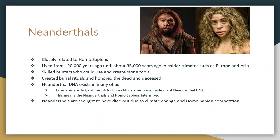DNA studies show that somewhere between one and three percent of the DNA of people of non-African descent is made up of Neanderthal DNA, meaning there was some intermixing and cross-breeding. But we're not 100% sure what happened to Neanderthals. There are two big competing theories in anthropology circles: one is that climate change caused too much pressure on the Neanderthal populations and they could not adapt; the other is that Neanderthals were either out-competed by Homo sapiens or joined Homo sapien communities. The fossil record on Neanderthals is still being uncovered.